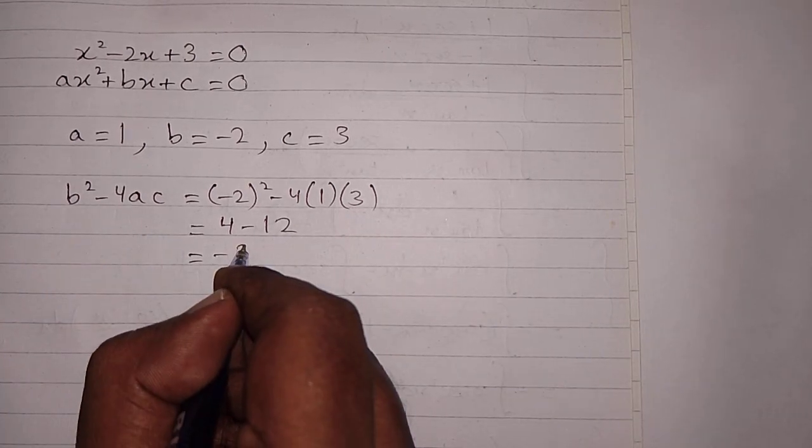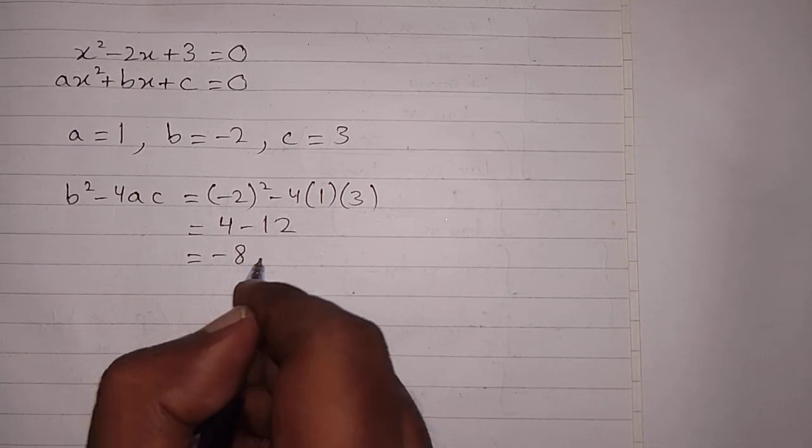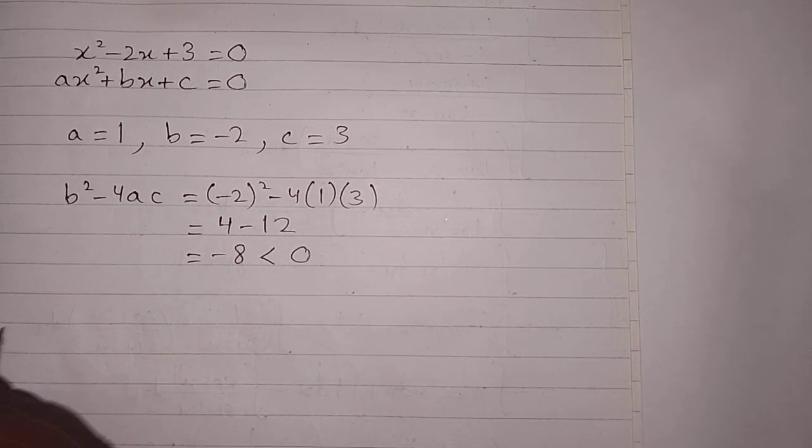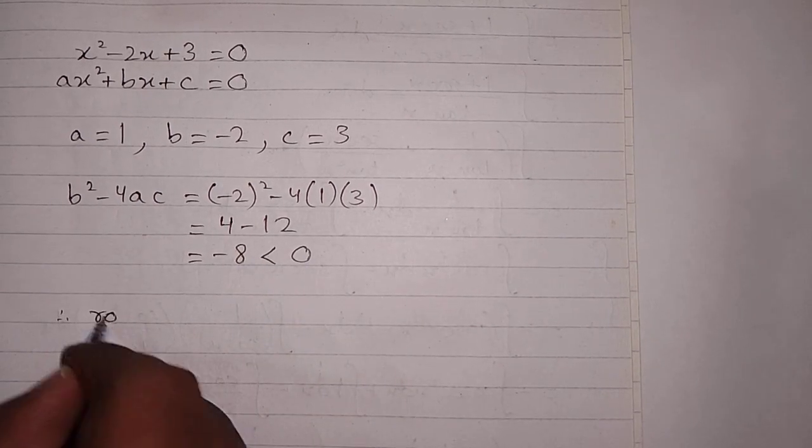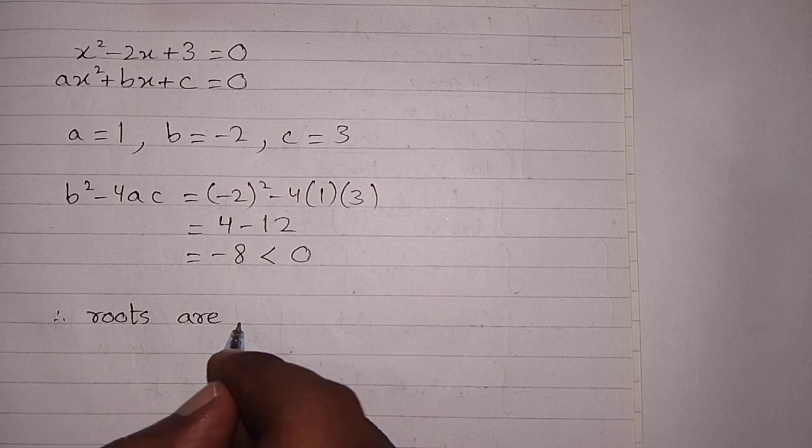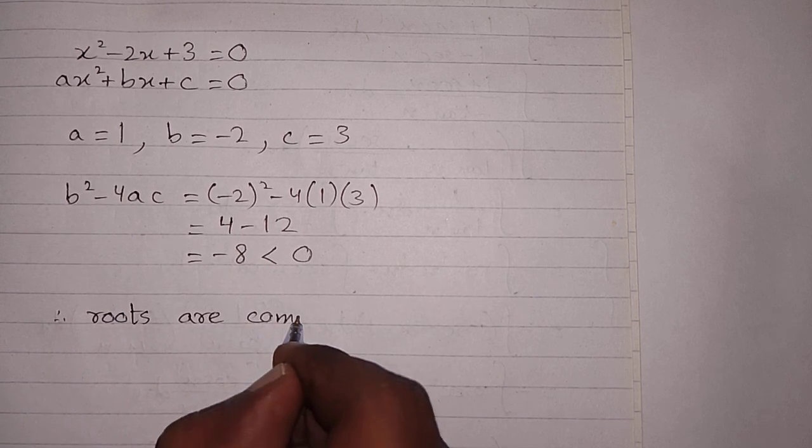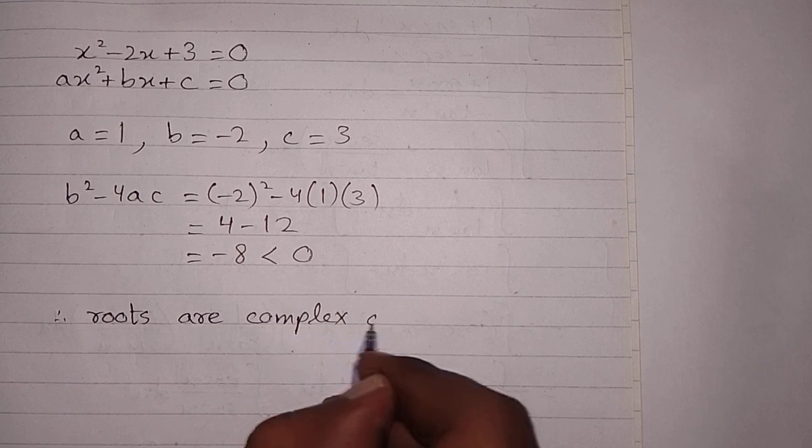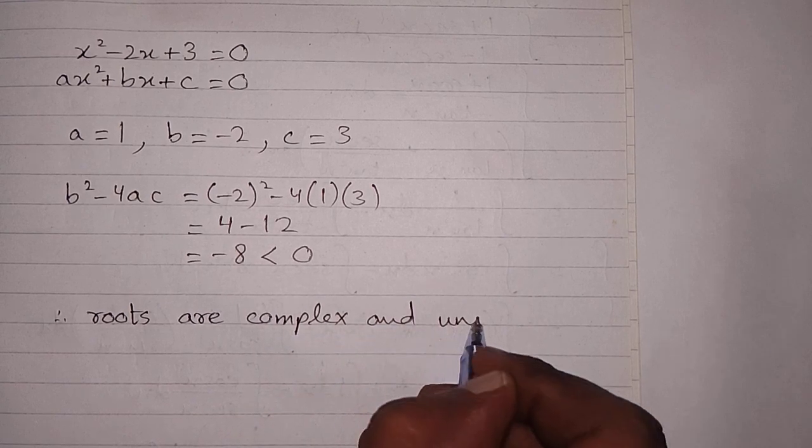So the value of b squared minus 4ac is minus 8. If the discriminant is less than 0, then the roots are complex and unequal.